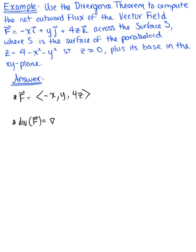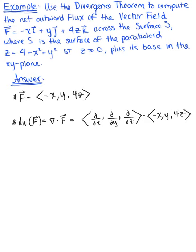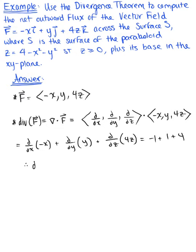The divergence of our vector field is computed by the dot product of the del operator with the vector field. The del operator has components d/dx, d/dy, d/dz, dotted with our vector field minus x, y, 4z. By the dot product, we have the derivative of minus x with respect to x, plus the derivative of y with respect to y, plus the derivative of 4z with respect to z. This gives us minus 1 plus 1 plus 4, so the divergence of the vector field equals 4.